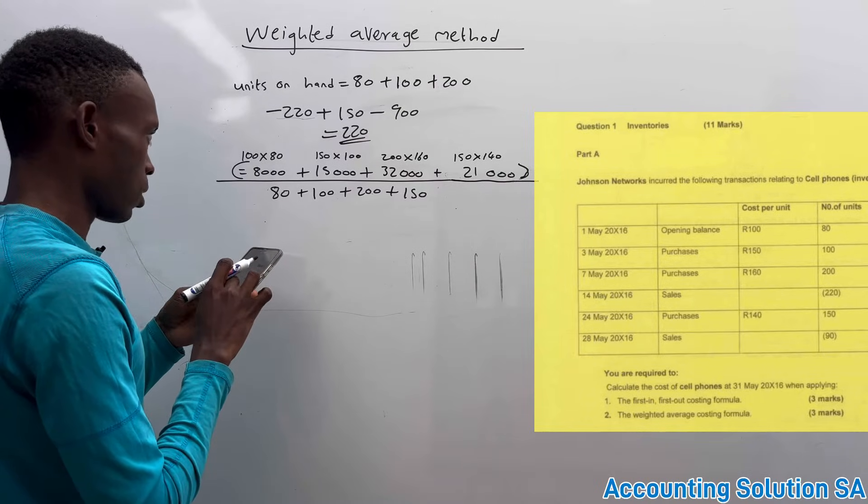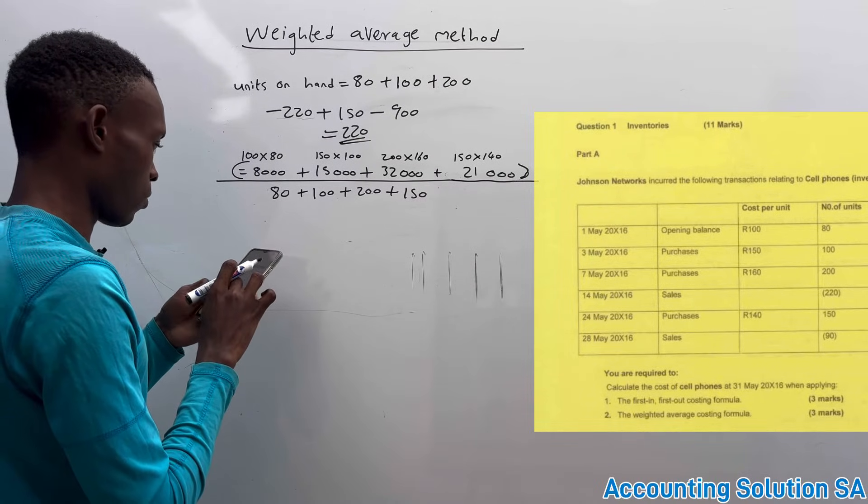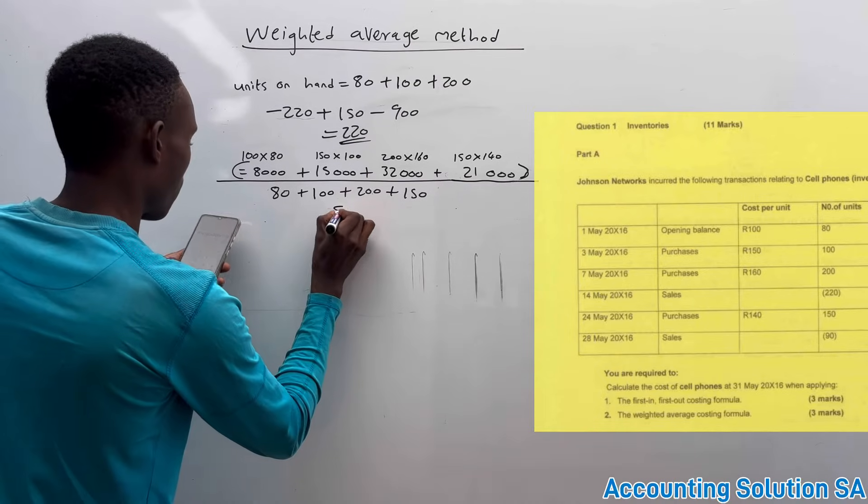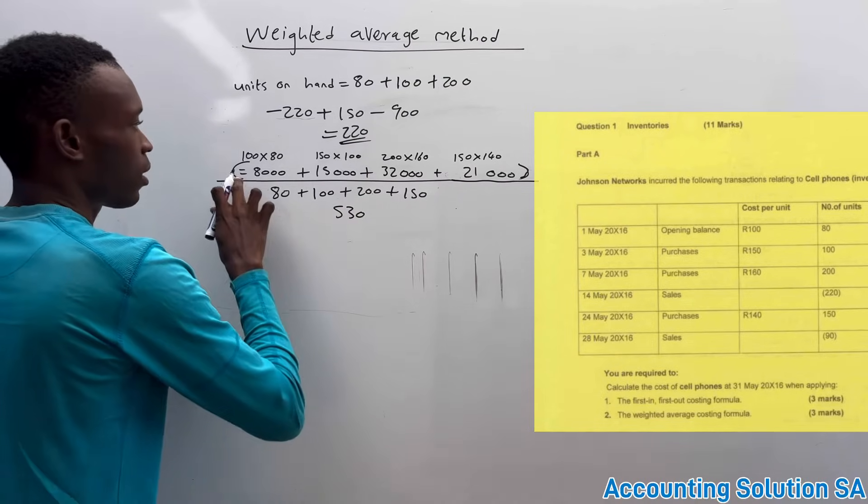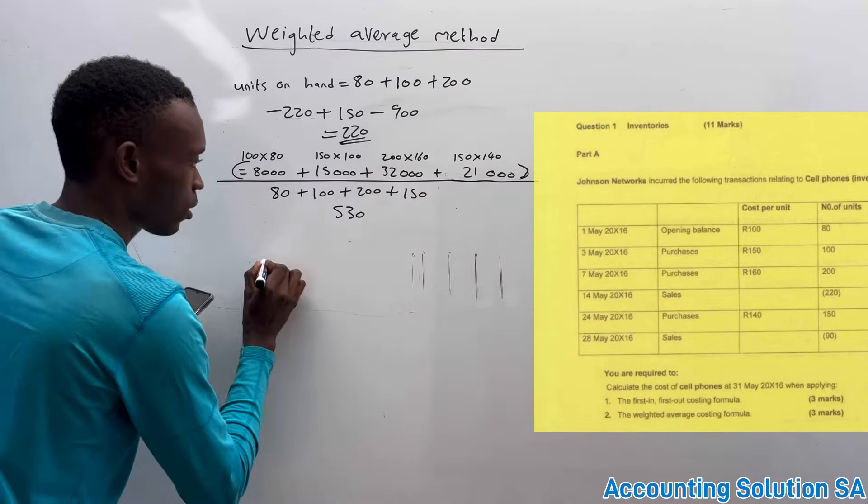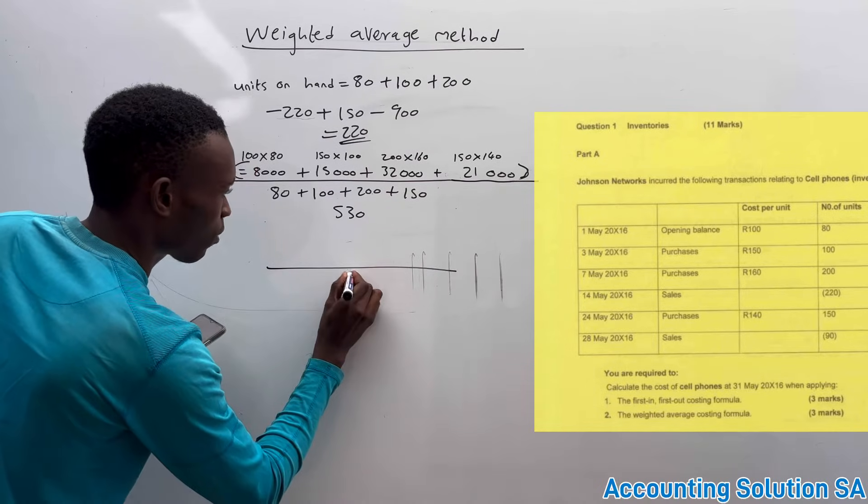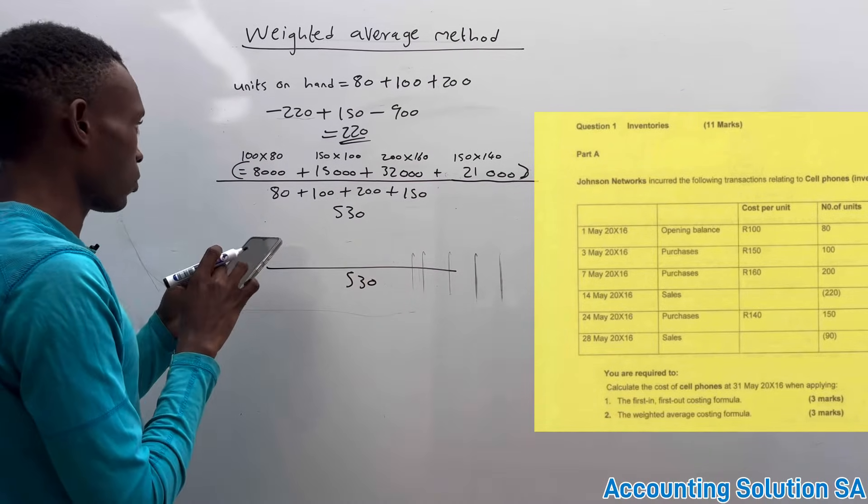80 plus 100 plus 200 plus 150 gives us 580. Even on the bottom, you have to calculate total. We have 580 on this side. Let's add on top.